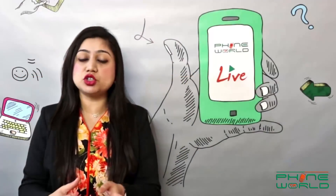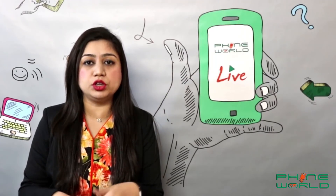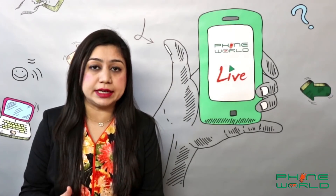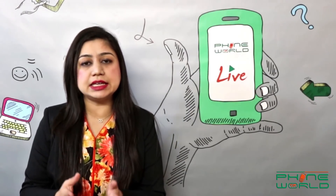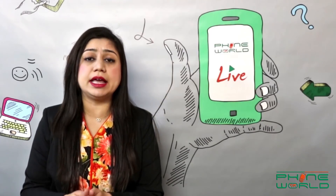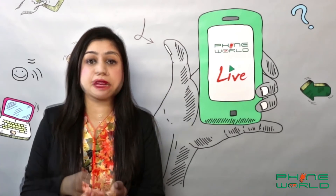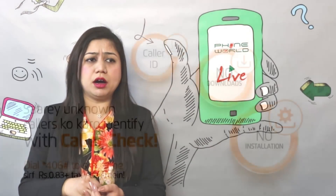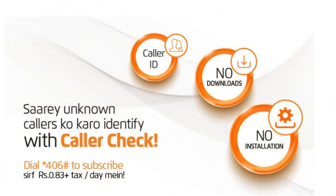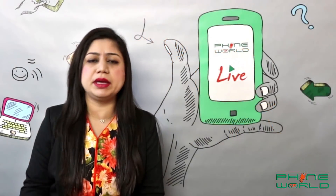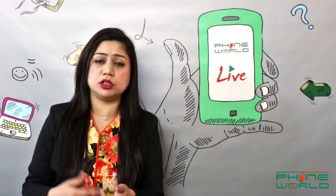Using those global and international databases, you will get the caller ID displayed when someone calls you. You don't need to have internet service because you are connected with UFON, so you will receive a flash message. However, UFON is charging 0.83 rupees per day, which is approximately 1 rupee a day.